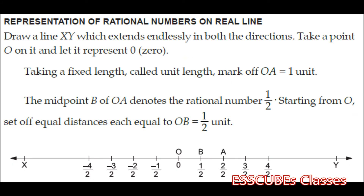We would now try to understand how to represent a rational number on the number line. First, we draw a line XY and make it extend endlessly in both directions. We take a point O representing 0. Taking fixed length called unit length, we mark off OA equal to 1 unit. The midpoint B of OA denotes the rational number 1 by 2. Starting from O, set of equal distances each equal to OB equal to half units on either side of 0.